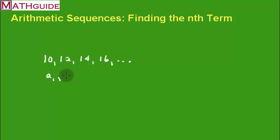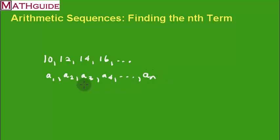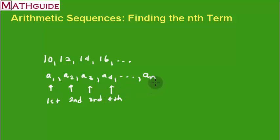Likewise, the second number is called a2, the third is a3, and the fourth is a4. We also use a generic term called an — just as a1 is the first number, a2 is the second, a3 is the third, a4 is the fourth, an represents the nth number. It goes on forever, so an could represent the 20th term or whatever variable expression we use to describe some term within the sequence.